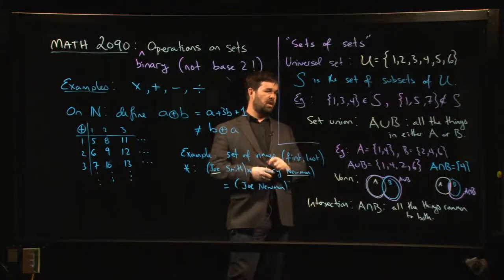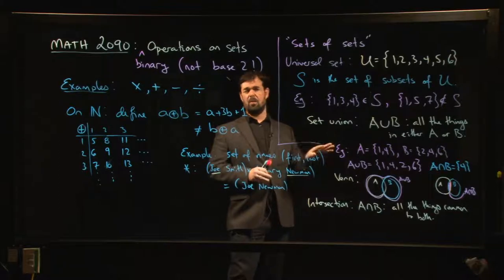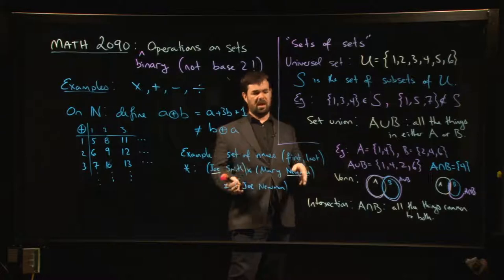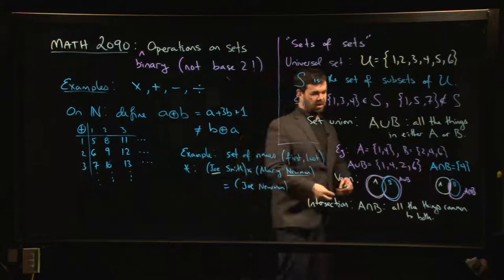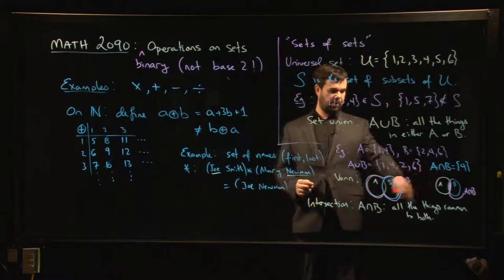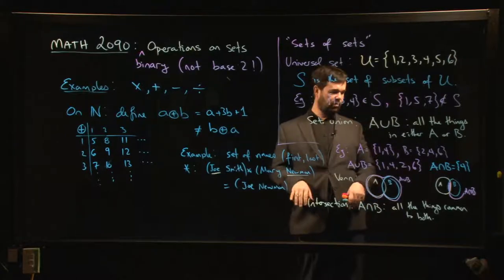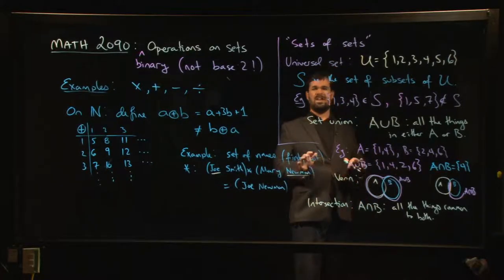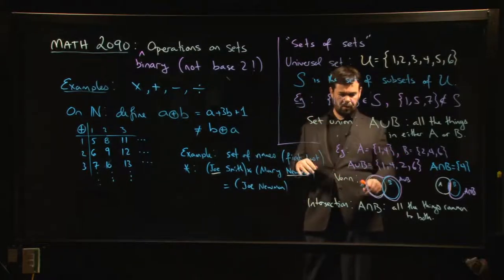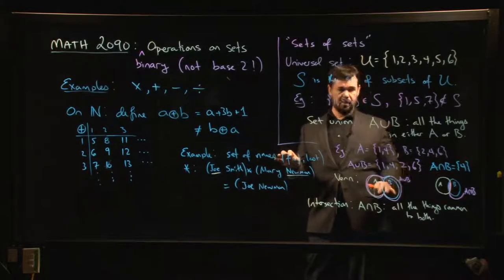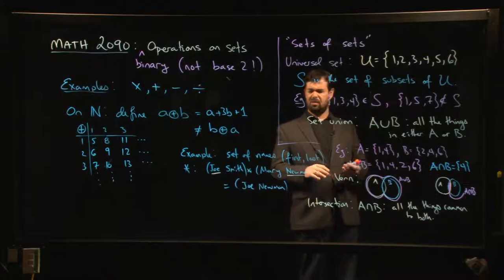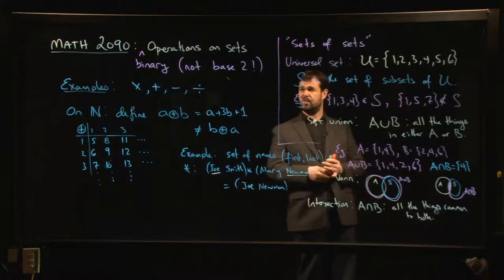So just to give you another example of binary operations - we won't work very much with unions and intersections in this course, but you might see them every now and then. There might be times where you're doing some of these Venn diagram exercises with your students. They're kind of a fun thing to play around with. I think it is worthwhile - I don't know what grade level is appropriate to talk about sets, but they are really fundamental objects in mathematics, so I think it's good to start thinking about them early if you can.